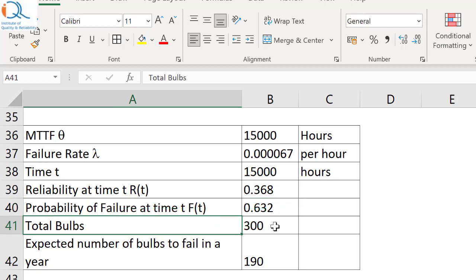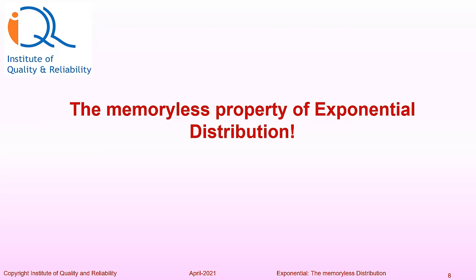Suppose a building has got 300 bulbs. In time is equal to MTTF, we can expect 190 to fail by that time. This is the practical meaning of time is equal to MTTF.